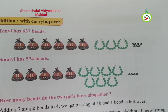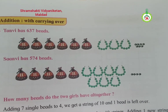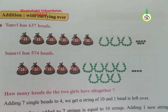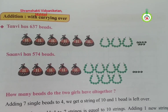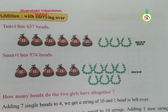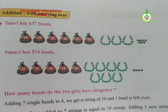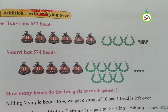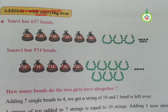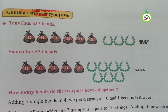Sanvi has 574 beads. Look in this picture. There are 5 purses given, and in a single purse there are 100 beads, so 5 purses means 500 beads. Then 7 strings are given, and in a single string there are 10 beads, meaning 70 beads. And then 4 single beads are given.